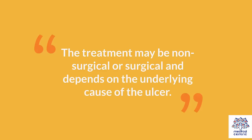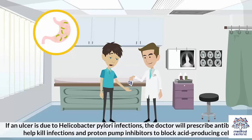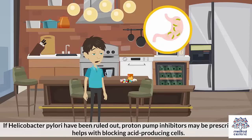Treatment. The treatment may be non-surgical or surgical and depends on the underlying cause of the ulcer. For non-surgical treatments, if an ulcer is due to Helicobacter pylori infections, the doctor will prescribe antibiotics to help kill infections and proton pump inhibitors to block acid-producing cells. If Helicobacter pylori has been ruled out, proton pump inhibitors may be prescribed to help with blocking acid-producing cells.